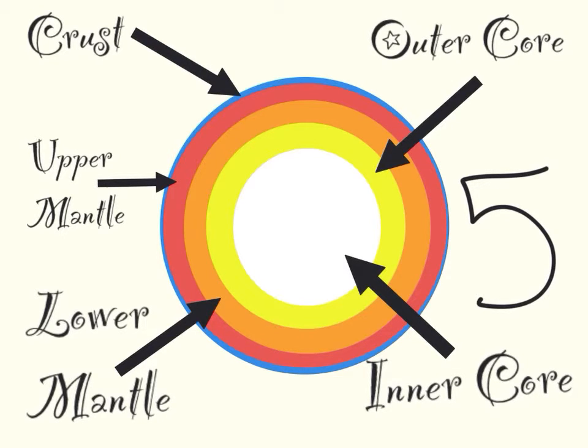The mantle, I'm combining the upper mantle and the lower mantle, is about 1,802 miles thick, and is 932 degrees to 1,652 degrees Fahrenheit.